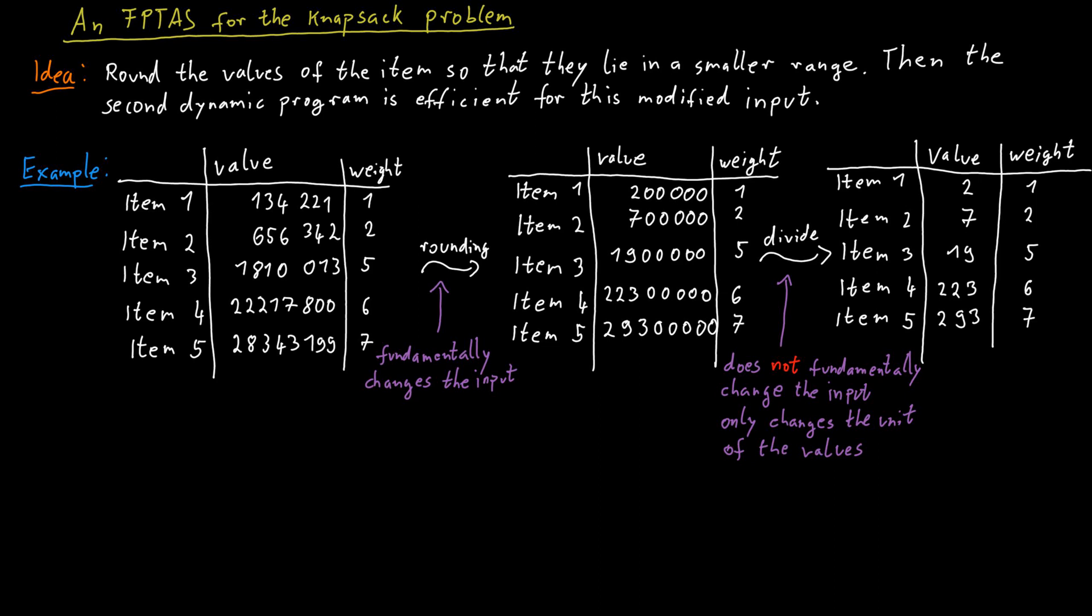Really, the only thing we have done is change the unit. Think about it this way. It does not really make a difference whether we measure the value all in euros, so is it 2 euros, 7 euros, 19 euros, or in pounds - is it 2 pounds, 7 pounds, or 19 pounds, or in dollars - is it $2, $7, $19?